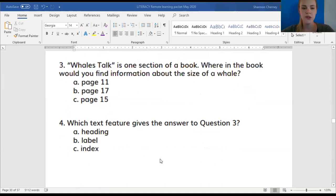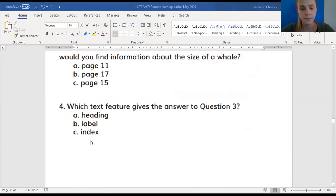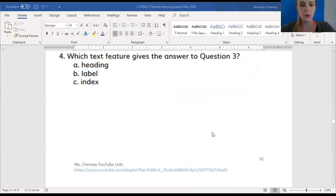Number four. Which text feature gives the answer to question three? Question three. Let's read that one together on two, one, two. Which text feature gives the answer to question three? Question three is this question. Which text feature gives us that answer? Is it heading, label, or index? What did we use to find that answer? What is this called? Go ahead and mark your choices now. A, B, or C. Pause the video if you need more time. Moving on.